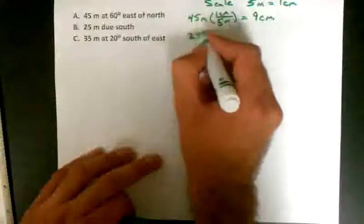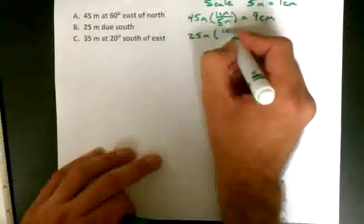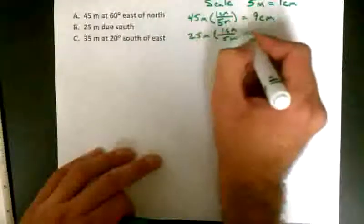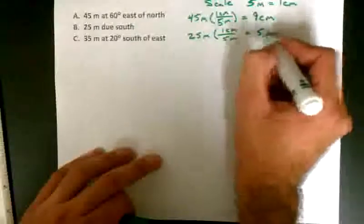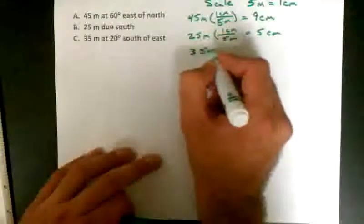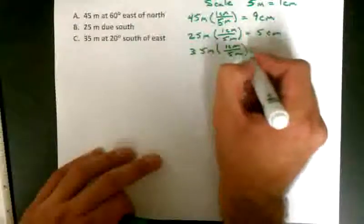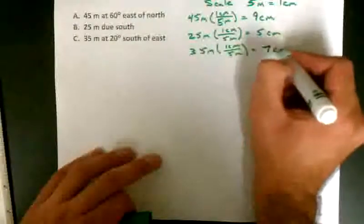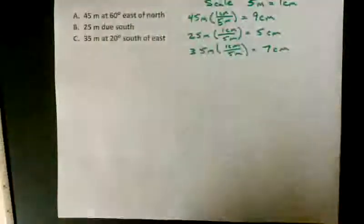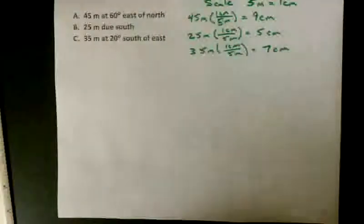25 meters when converted will be 5 centimeters, and 35 meters when converted will be 7 centimeters. Now all these vectors should fit nicely onto my page.